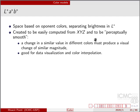There's also a system called LAB. This is a system that's based on opponent colors. It separates brightness in L, so L contains only the intensity values, while A and B represent the colors. It is created to be easily computed from XYZ and to be perceptually smooth, so a change in a similar value in different colors produces a visual change of similar magnitude.